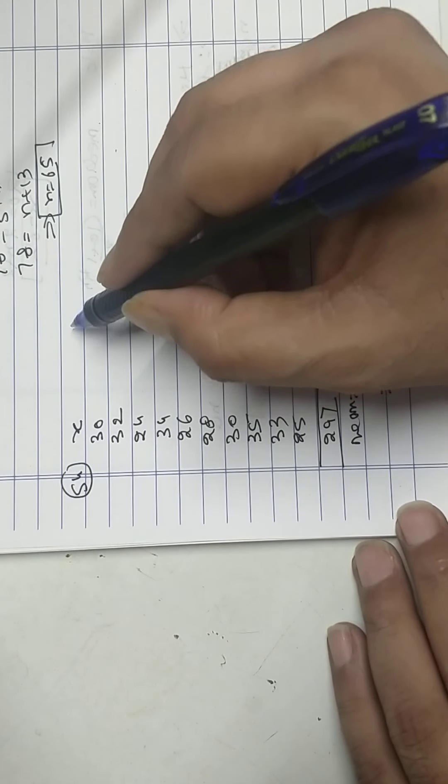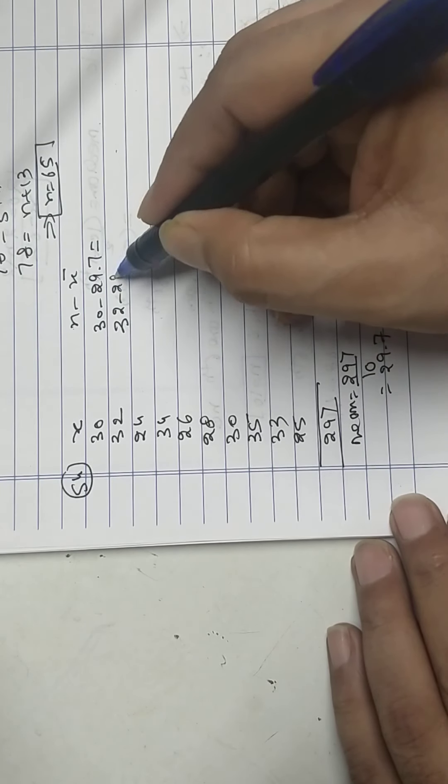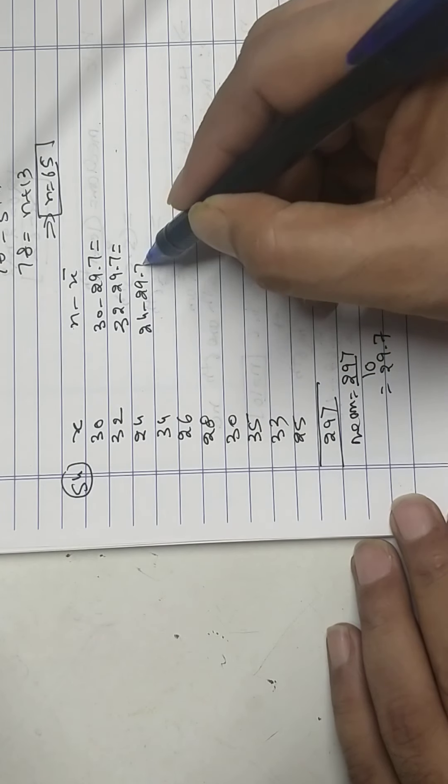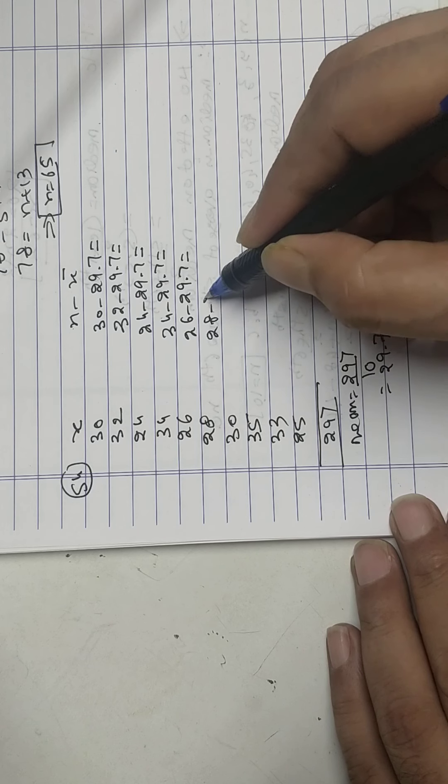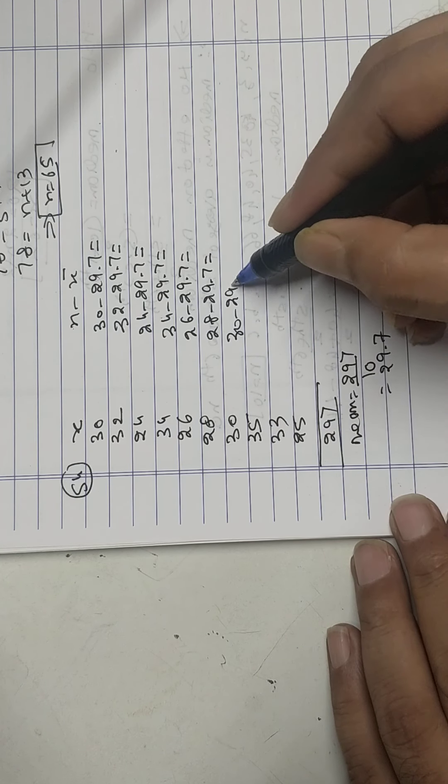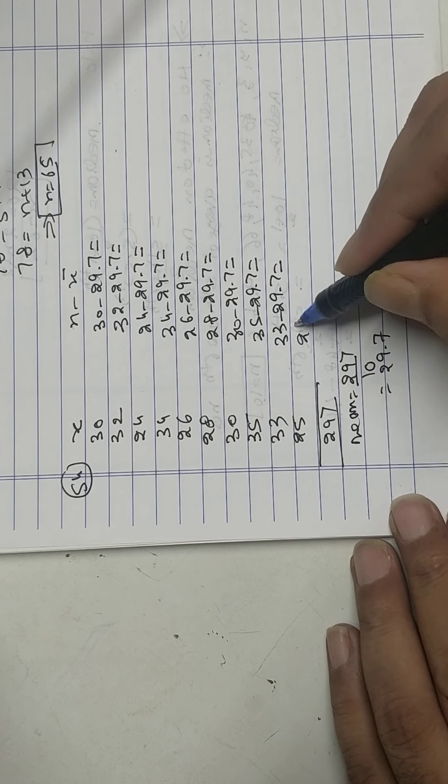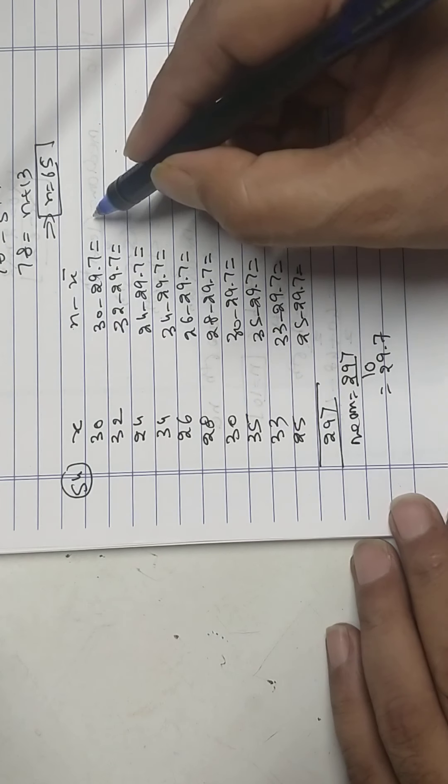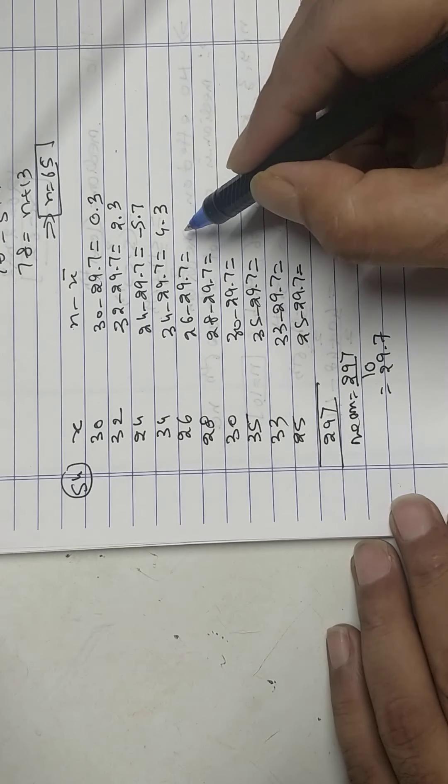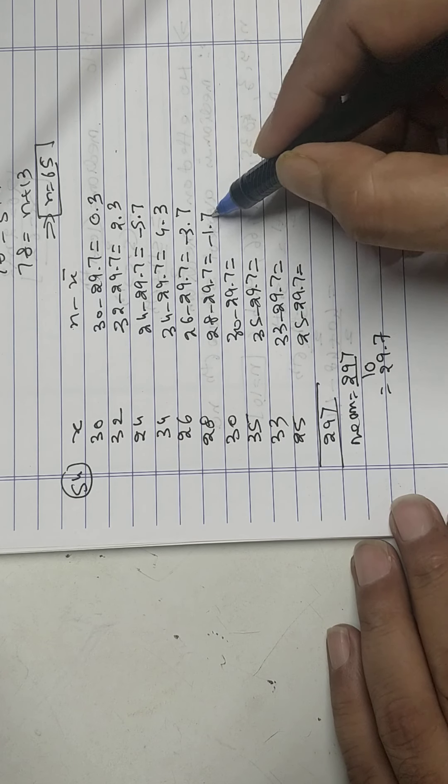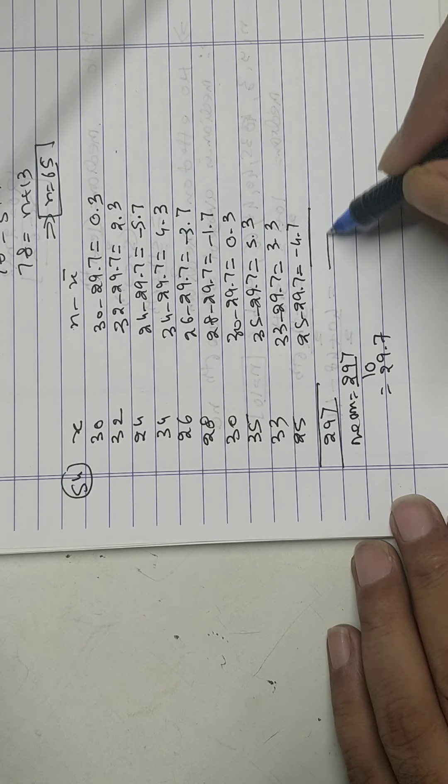Find out deviation, x minus x bar: 30 minus 29, 32 minus 29, 24 minus 29, 34 minus 29, 26 minus 29, 28 minus 29, 30 minus 29, 35 minus 29, 33 minus 29, 25 minus 29. Subtract: 1, 3, -5, 5, -3, -1, 1, 6, 4, -4. Add them, is always 0.